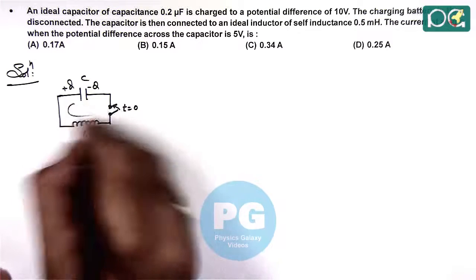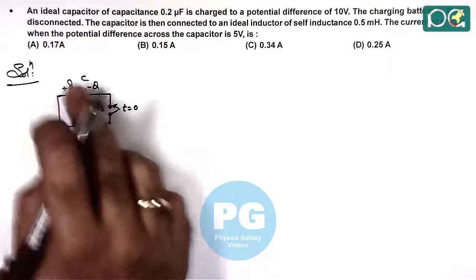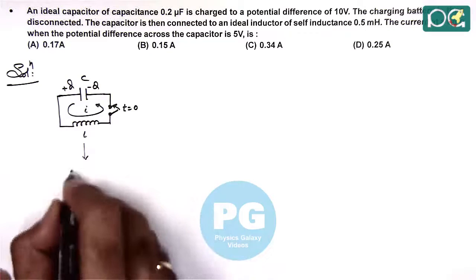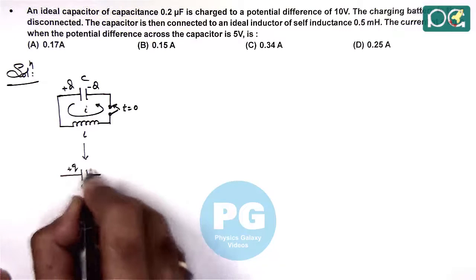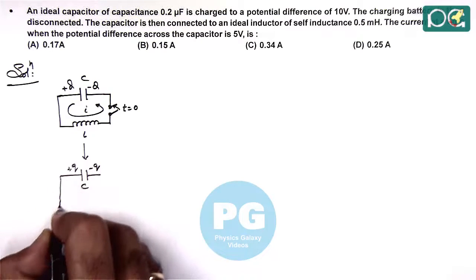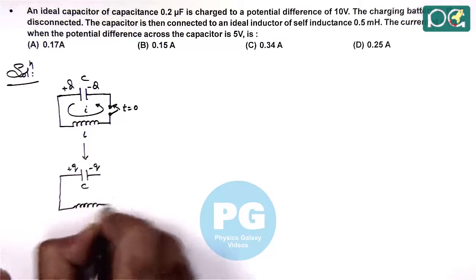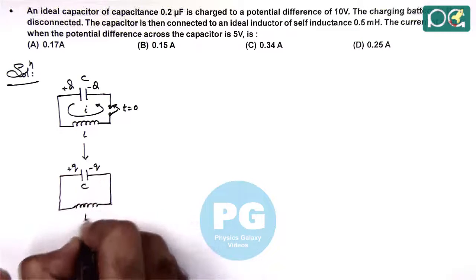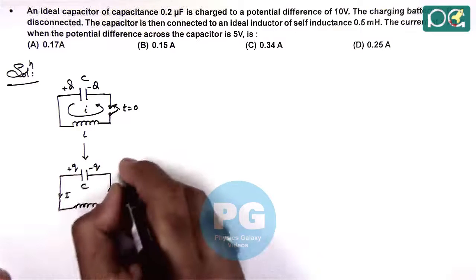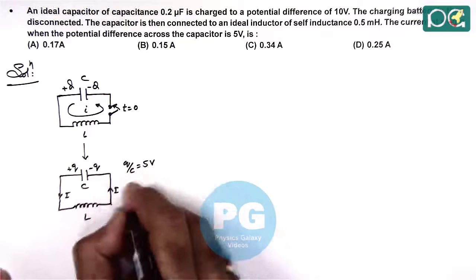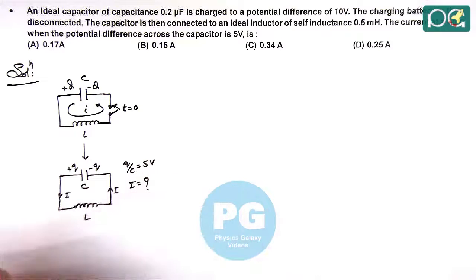Due to closing the switch, current flows and the charge decreases. After some time, the charge on the capacitor becomes q, and the circuit current becomes I such that q by C equals 5V, and the current we are required to calculate.